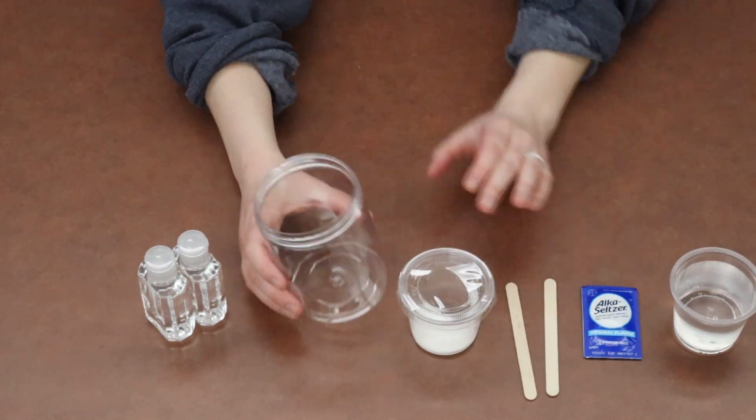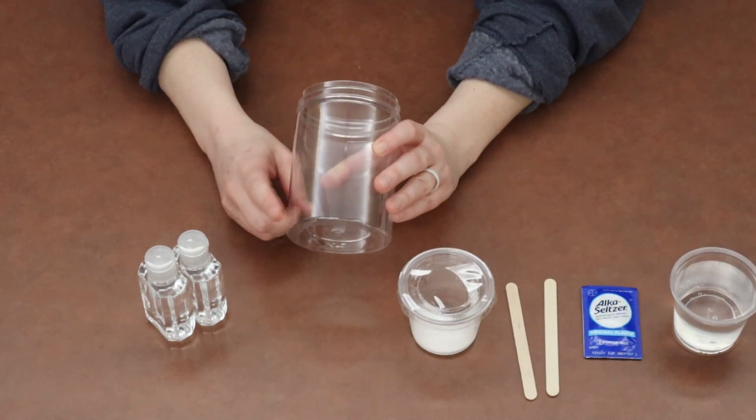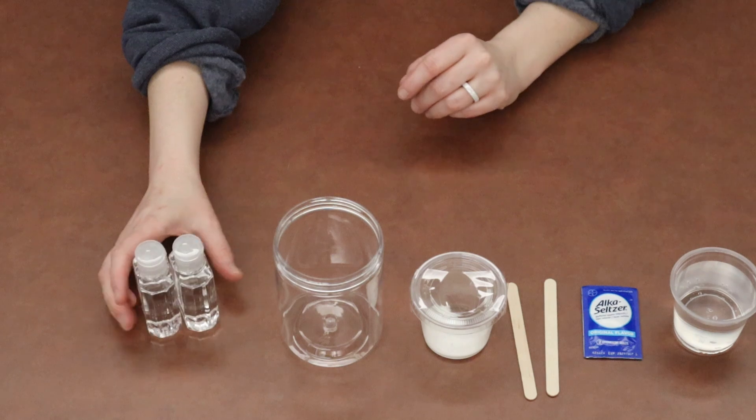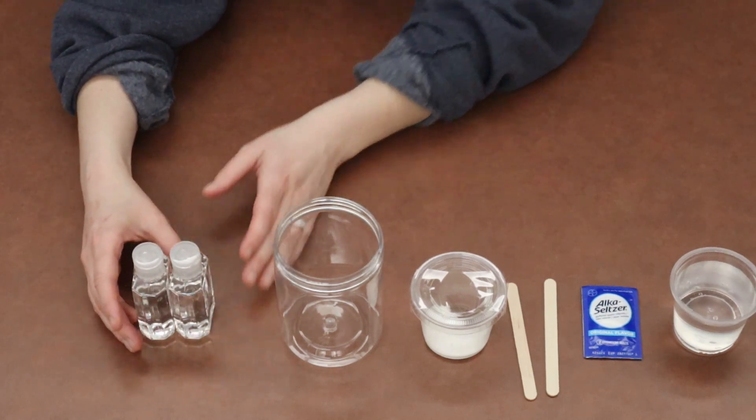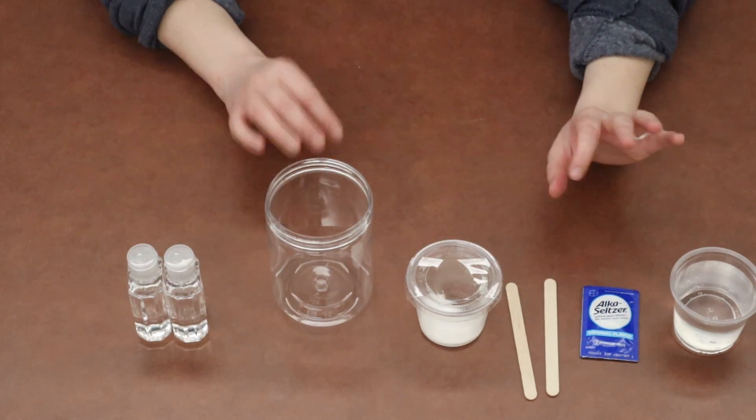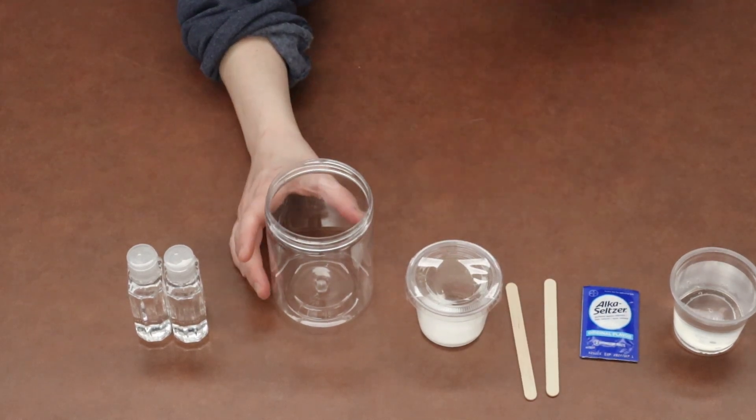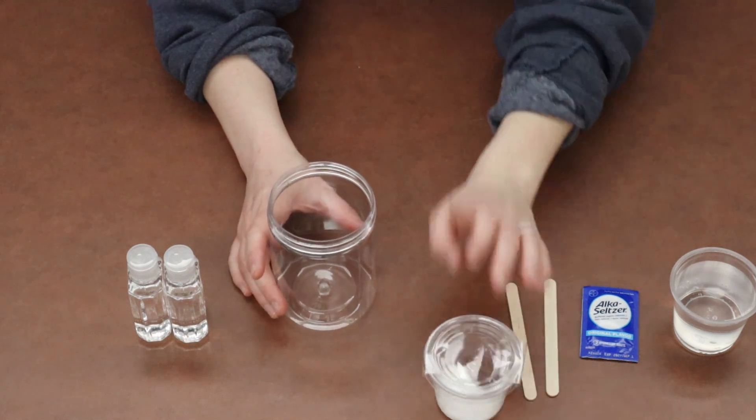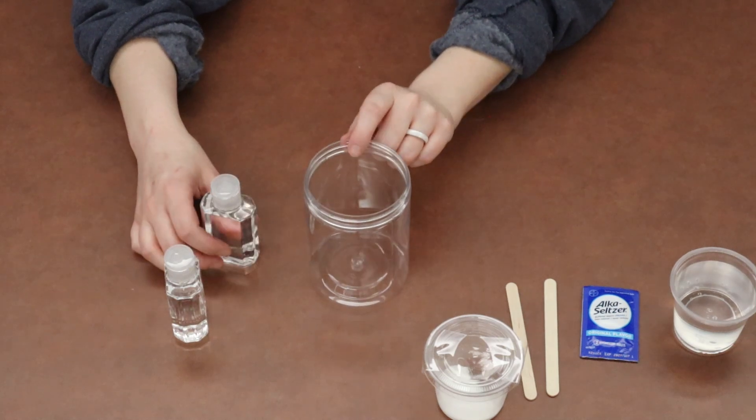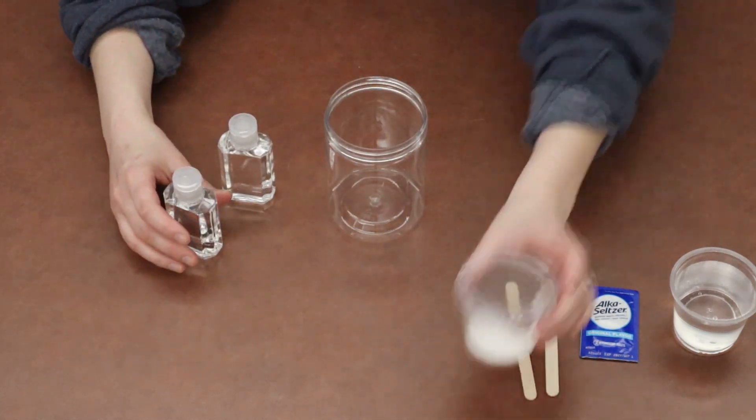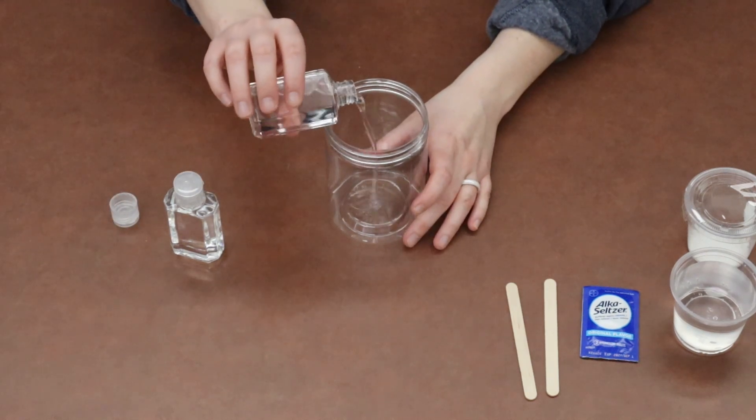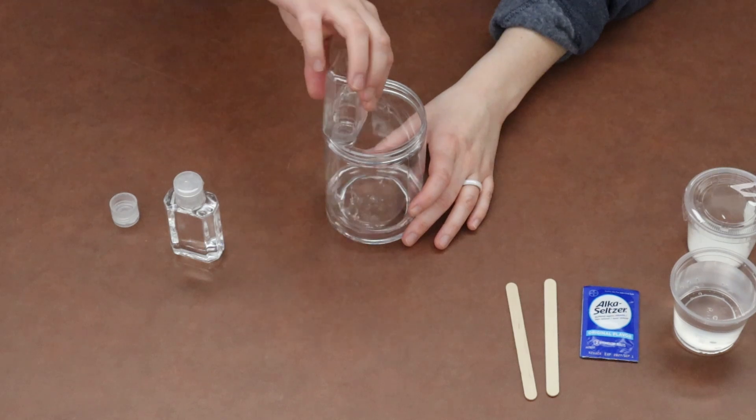So today's project is all about creating a little snowstorm in our plastic jar. And the science behind our project has to do with a word called density. And then also we're going to be looking at some chemical reaction things. So the first thing that we're going to do is we are going to pour all of our baby oil into our plastic jar. So caregivers, go ahead and help your little one open up the containers of baby oil and then carefully pour them into our plastic jar.